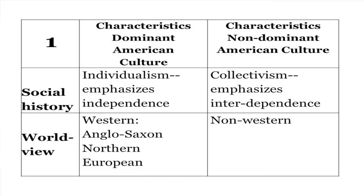Let's look at the social history of the two cultures. According to this chart, the dominant European and American culture emphasizes individualism and independence, while collectivist cultures emphasize interdependence, getting along, and collaborative efforts. The world view is Western, Anglo-Saxon, Northern European, and the world view of the non-dominant cultures is non-Western.